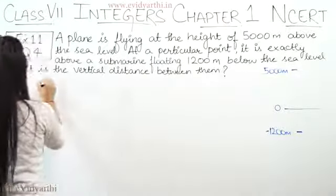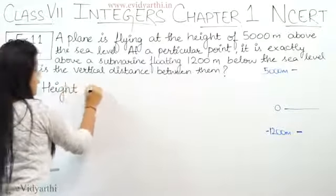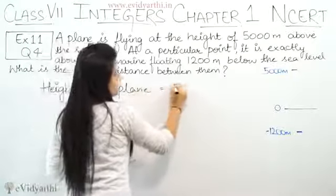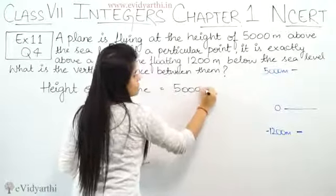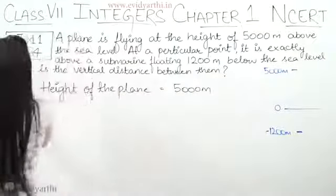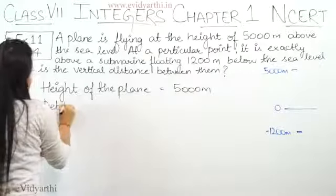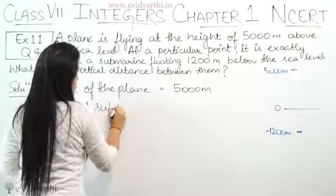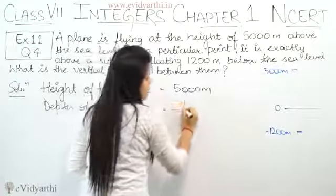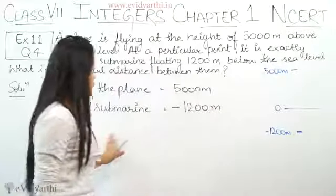We will start with the height of the plane given, which is equal to 5000 meters. Next, we have our submarine given. We will write depth of submarine, that is minus 1200 meters.